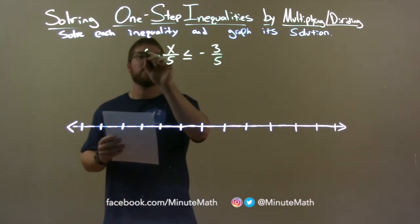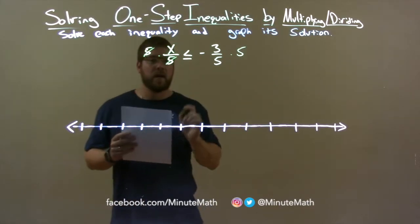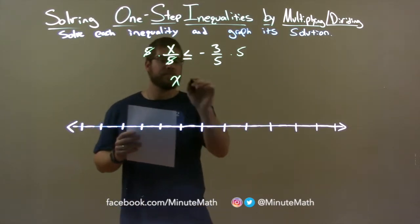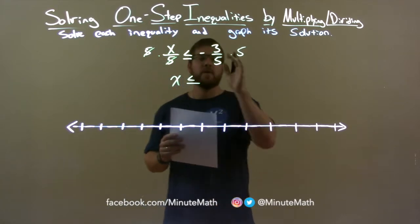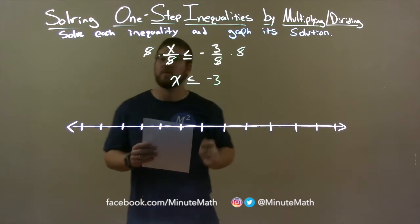First step in doing that, multiplying both sides by five. Fives eliminate on the left, giving the x by itself. It's still less than or equal to, but negative three-fifths times five, these fives end up canceling out, and we have negative three.